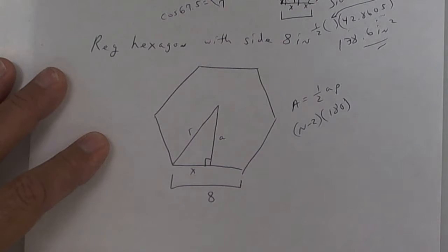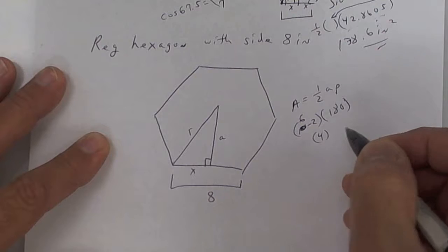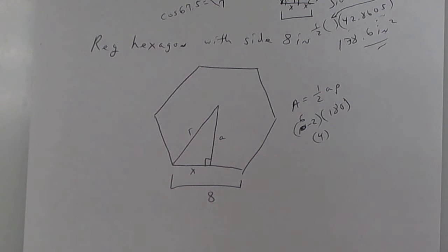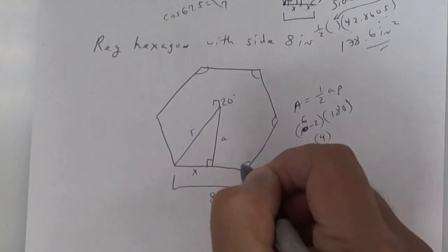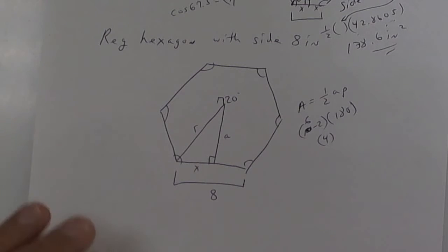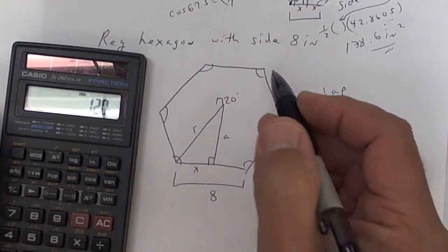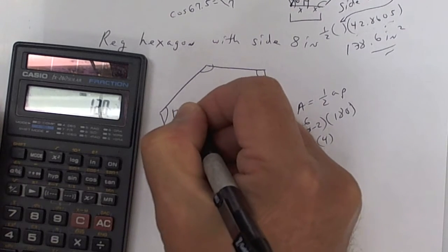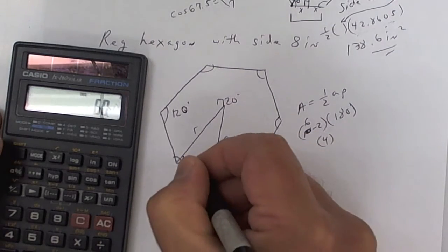This one has six sides, so that's 4 times 180, which gives me 720. All of these interior angles add up to 720. They'll ask you what's the measure of the interior angle sum — the answer is 720. Take 720 and divide by 6 to get one of these angles. We want half of that, so divide by 2. This comes out to 60 degrees.